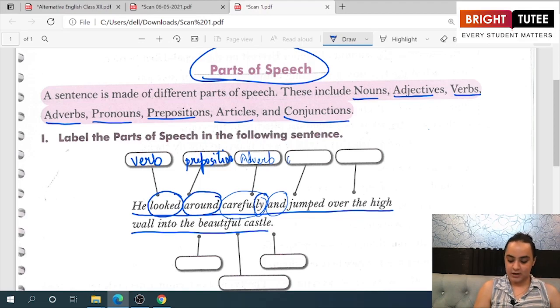Then we have 'the.' What is 'the'? 'The' is part of an article. We have three articles: A, An, and The. So 'the' is a part of an article.